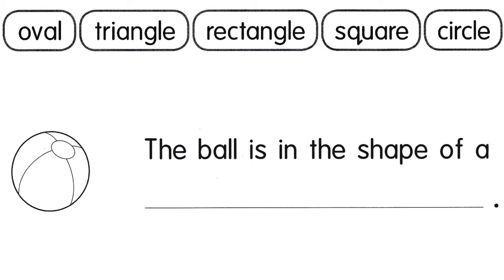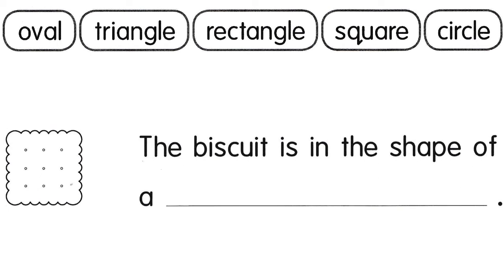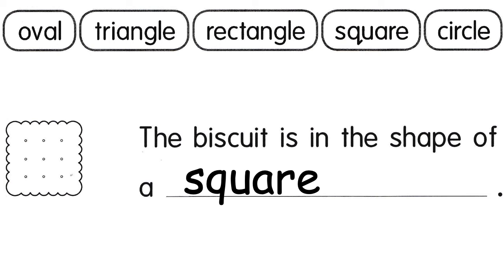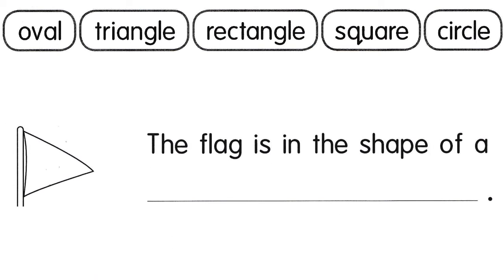The ball is in the shape of a circle. Write it down. The biscuit is in the shape of a square. Write it down.